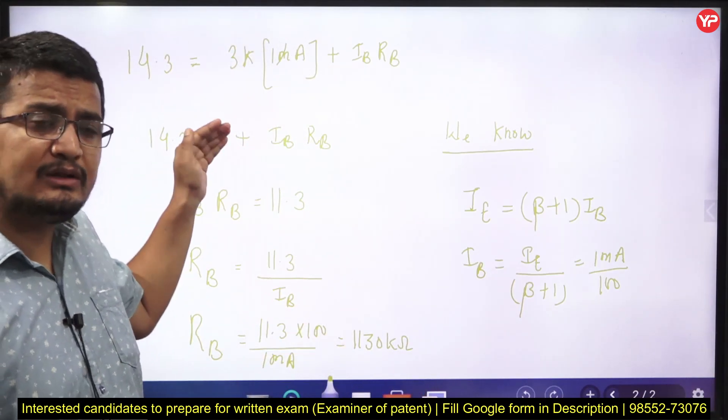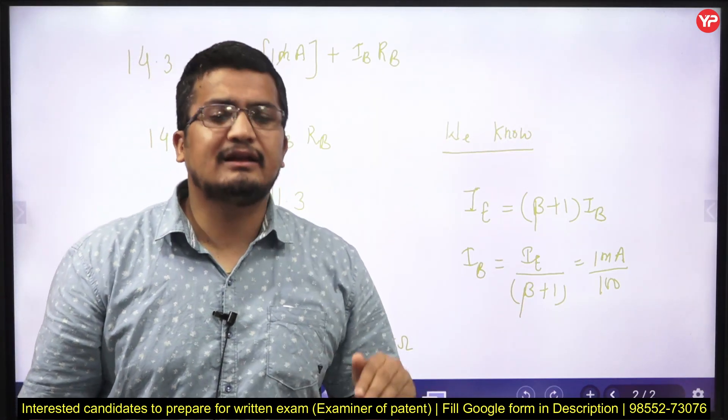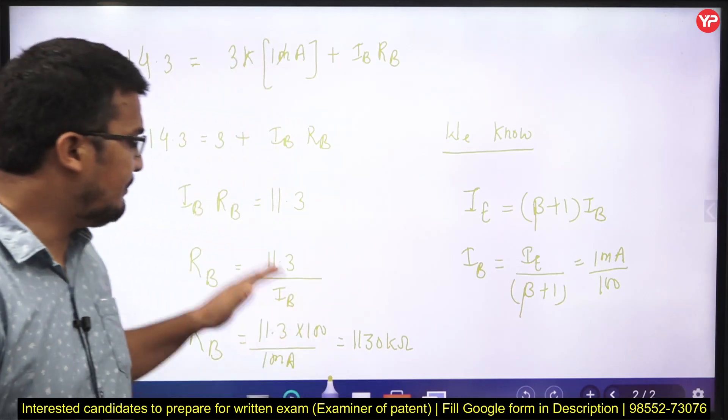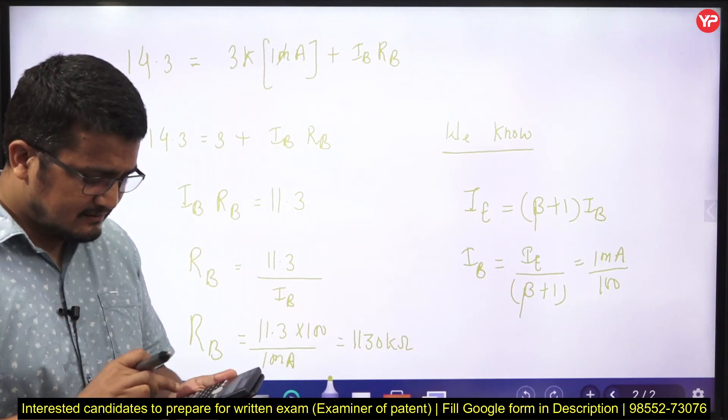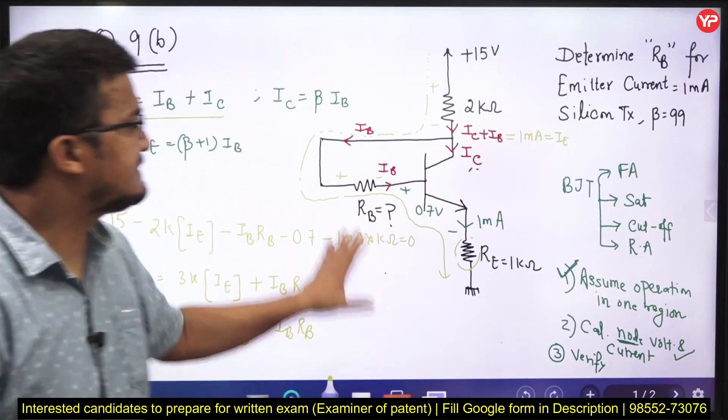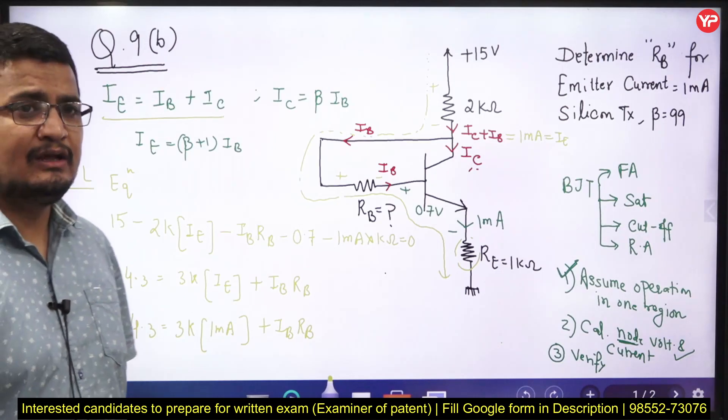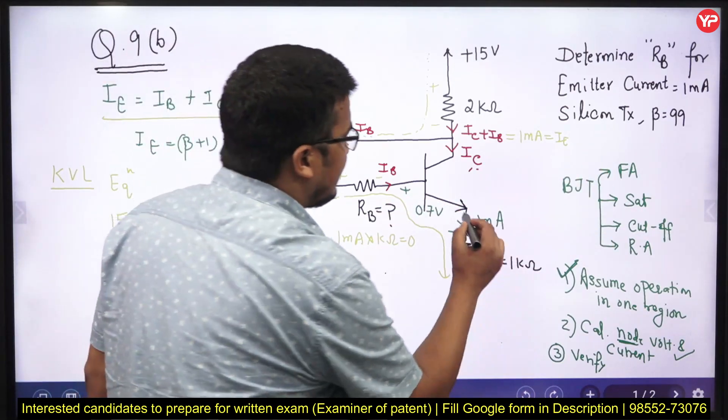While doing the objective question, I can skip many of the steps. But while writing the conventional question, you need to write in the proper way. Now this was your conventional question, finally got your answer. You can see, first I make the statement. Now see, if I say what is this voltage? To verify, I can verify in the beginning. Yes, it is in the forward active region.